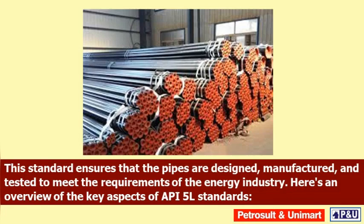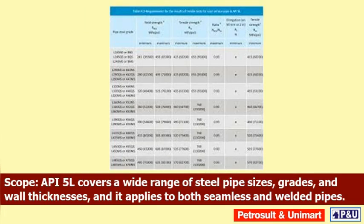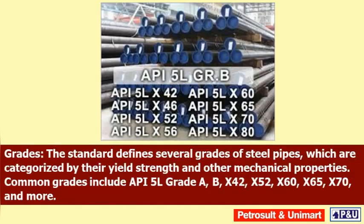Here is an overview of the key aspects of API 5L standards. Scope: API 5L covers a wide range of steel pipe sizes, grades, and wall thicknesses, and it applies to both seamless and welded pipes. Grades: The standard defines several grades of steel pipes, which are categorized by their yield strength and other mechanical properties.